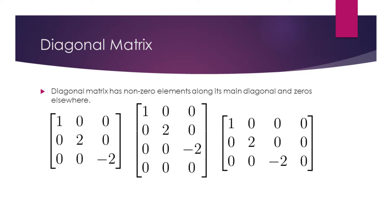Even though the matrix in the middle and on the right are not square matrices, they have non-zero entries only along the main diagonal and zeros elsewhere. So they too are considered as diagonal matrices.